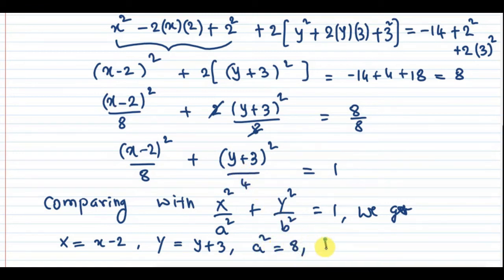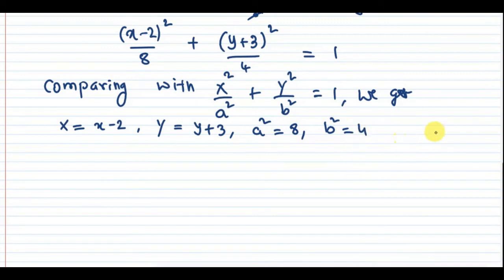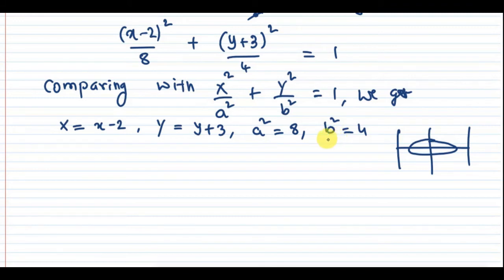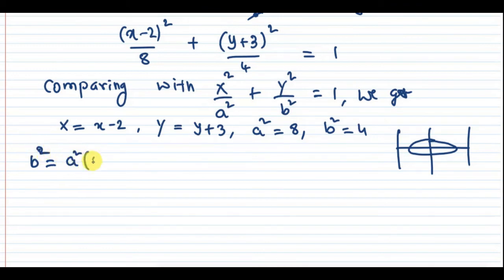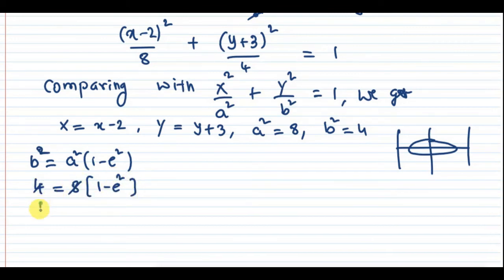This is a horizontal ellipse since a² > b². For eccentricity, using the formula b² = a²(1 - e²): 4 = 8(1 - e²), so 1/2 = 1 - e², therefore e² = 1/2, and eccentricity e = 1/√2.